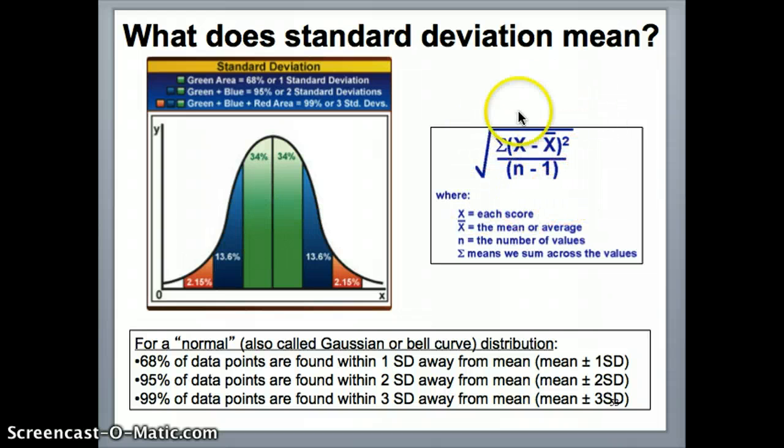You can calculate standard deviation using this formula that's shown right here, which is the square root, the sum of each individual measurement. So remember that you have these data points, right? So each individual data point subtracted from the mean and then square that quantity and divided this by n minus 1 and take the square root of that will give you the standard deviation quantity.